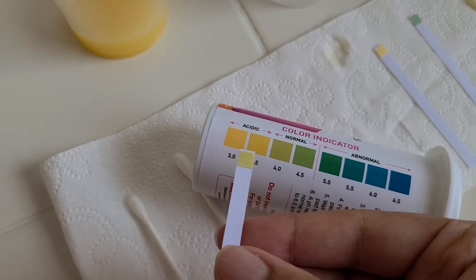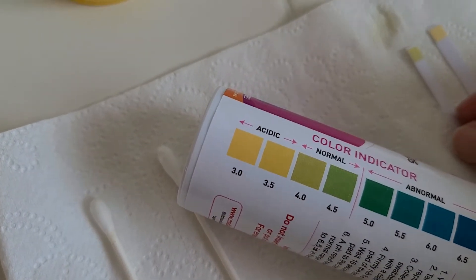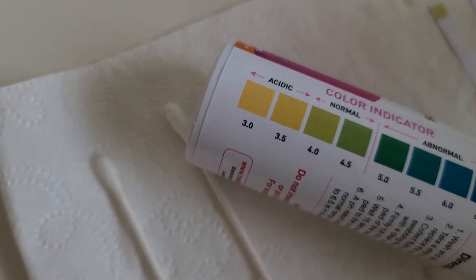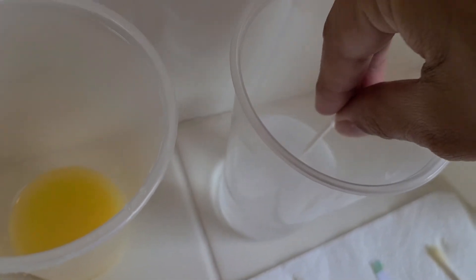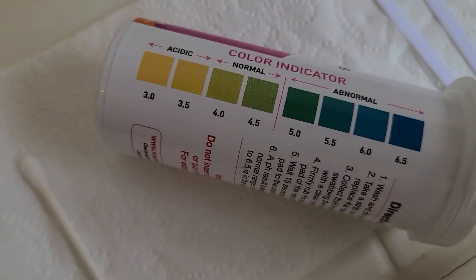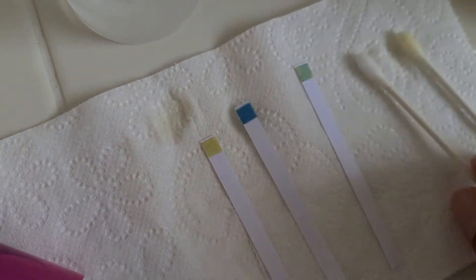It might be like a 3.5 or a 3, and that makes sense for orange juice because orange juice is acidic. And then we're going to do the last one which is baking soda water, and that's going to give you an alkaline result which would be over here in the abnormal range. So we're going to use the middle one that we haven't used yet, and that changed immediately.